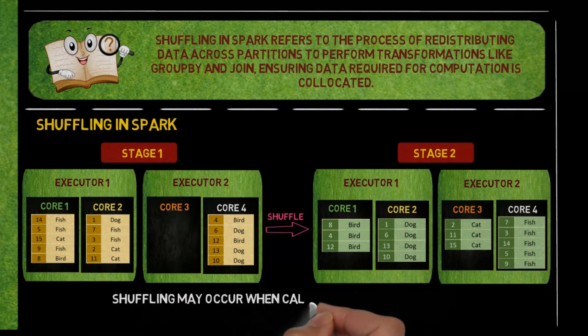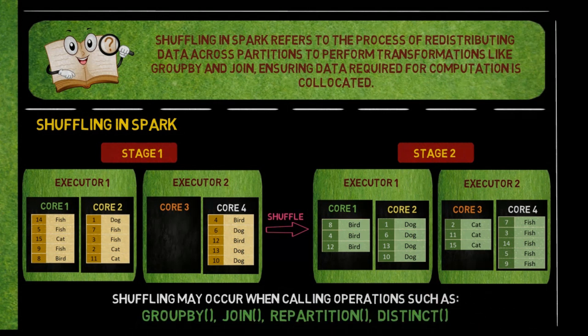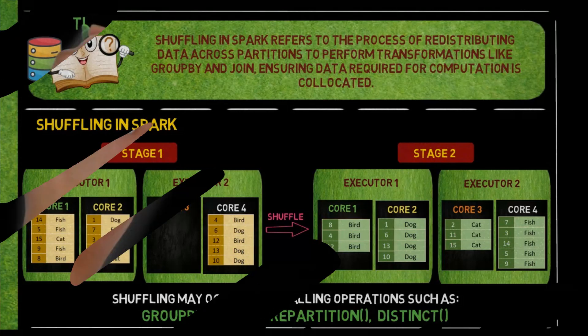Shuffling may occur when calling operations such as group by, join, repartition, and distinct. During a shuffle, data is moved between different partitions and nodes. This involves sorting and transferring data over the network, which can be resource intensive and impact performance.